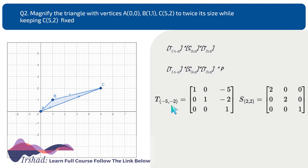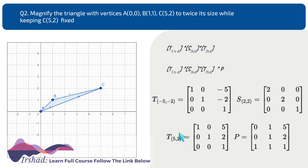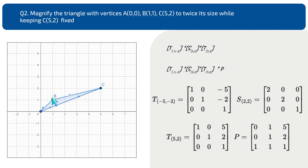The translation by (-5,-2) is written with translation values in x and y directions. The scaling matrix uses a scaling factor of 2. The positive translation matrix uses (+5,+2). The coordinate matrix has three vertices: (0,0), (1,1), and (5,2), with a homogeneous coordinate of 1.